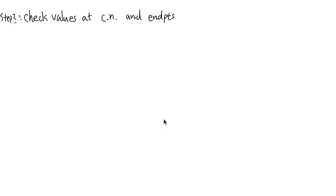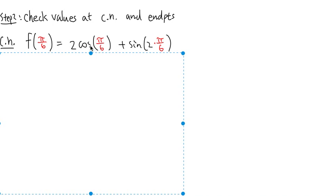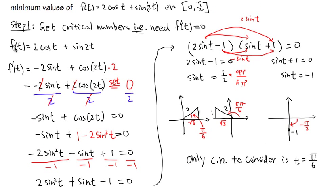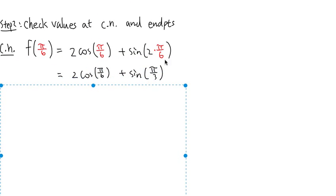The second step is to check the function values at the critical number and the endpoints. At the critical number, we evaluate f(π/6) = 2cos(π/6) + sin(2 · π/6). Simplifying the argument of sine: 2 times π/6 = π/3, so we need 2cos(π/6) + sin(π/3).